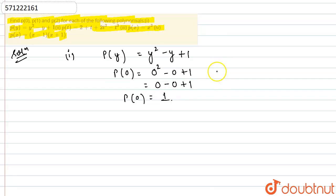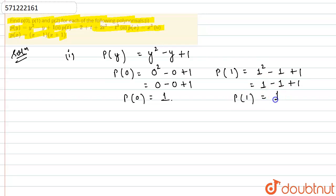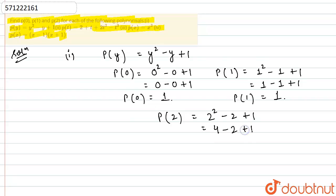Now I will find p(1). So this will become 1 squared minus 1 plus 1, which is 1 minus 1 plus 1. So 1 plus 1 and minus 1 will cancel each other, and we will be left with p(1) as 1. Now p(2) will be 2 squared minus 2 plus 1, or 4 minus 2 plus 1. So 4 plus 1 is 5, and 5 minus 2 is 3. So we are getting p(2) as 3. These are the values for p(0), p(1) and p(2) for this first part.